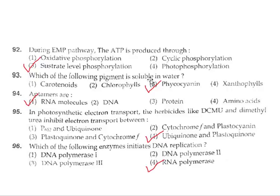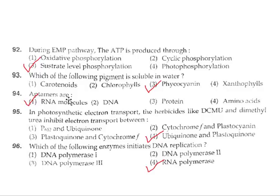Question 93: Which of the following pigments is soluble in water? Phycocyanin is water-soluble. All phycobiliproteins are water-soluble; the rest are all lipid-soluble. Question 94: Aptomers are RNA molecules. So the correct answer is option 1.